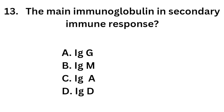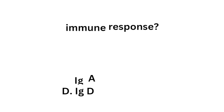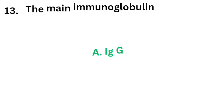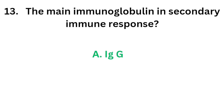Question 13. The main immunoglobulin in secondary immune response: Option A, IgG; Option B, IgM; Option C, IgA; Option D, IgD. The correct answer is Option A, IgG.